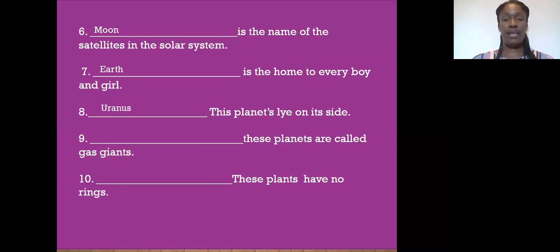Number nine, this planet, or these planets, I should say, so that means we are referring to the inner and outer planets. These planets are called the gas giants. Anyone who knows, inner or outer? Outer is correct.